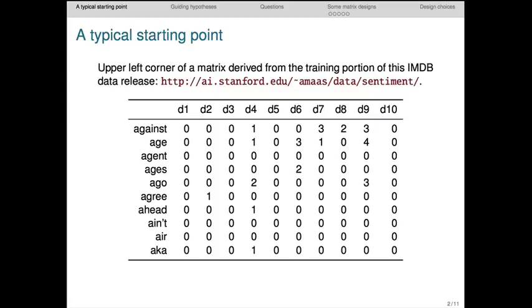Here's a typical starting point for building distributional models. It's the upper left corner of a very large matrix I derived from a collection of movie reviews on IMDB. The rows are labeled with words, which are just given in alphabetical order, and the columns are labeled with document indices.